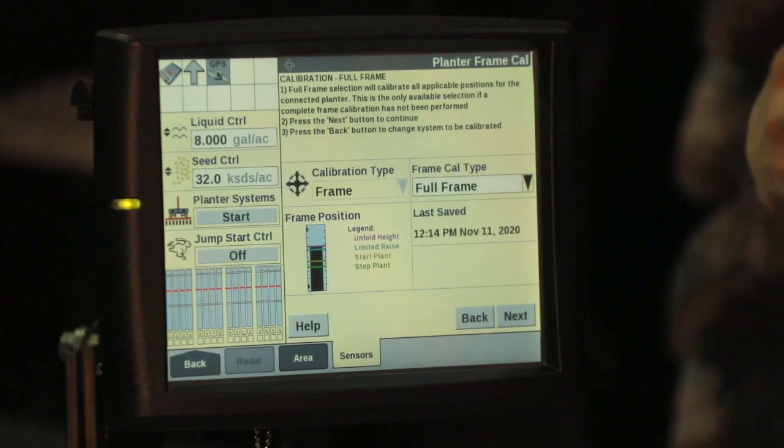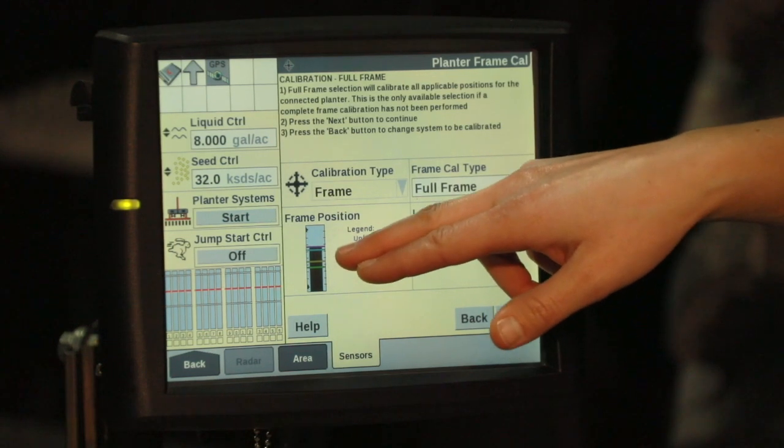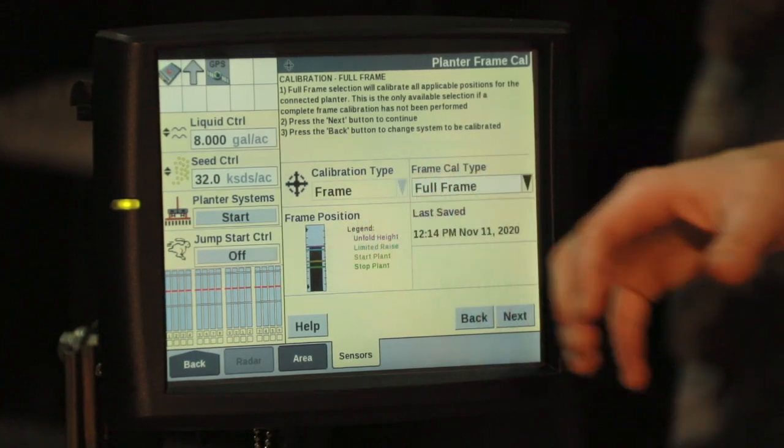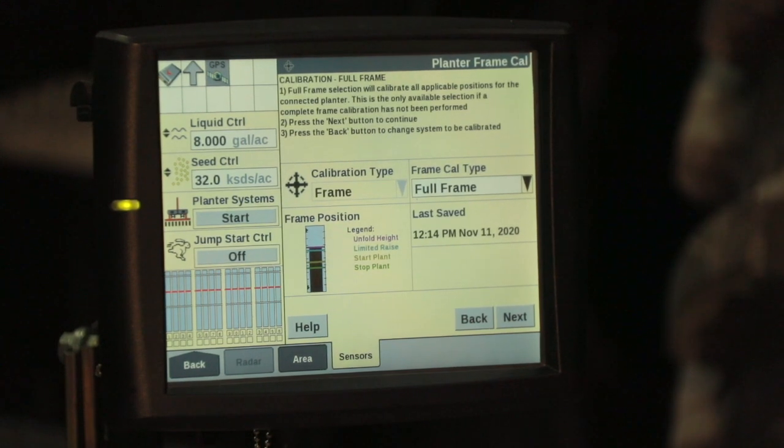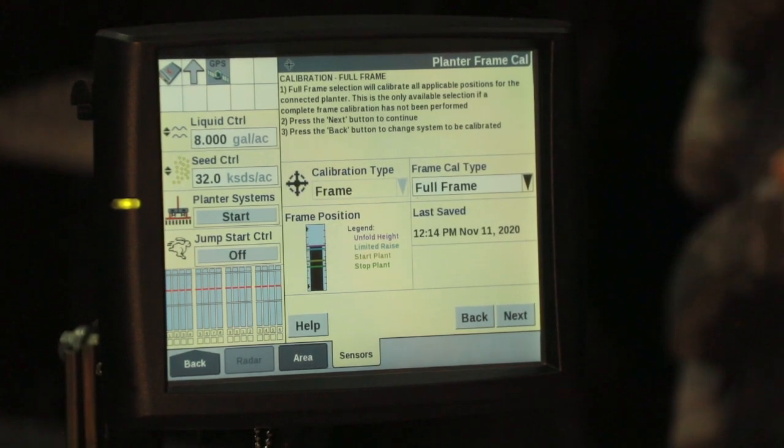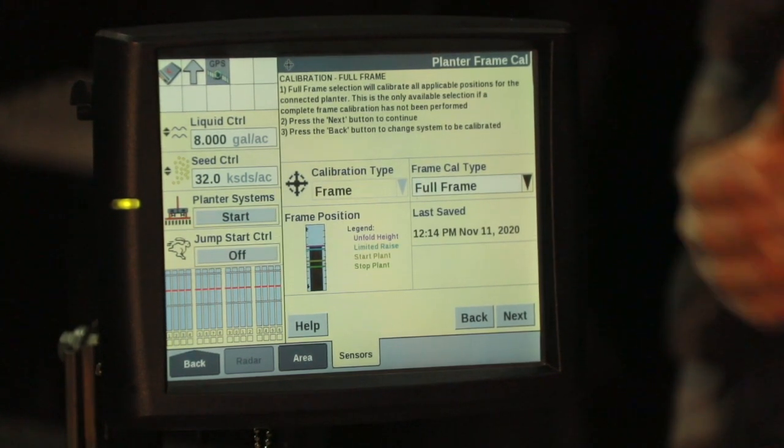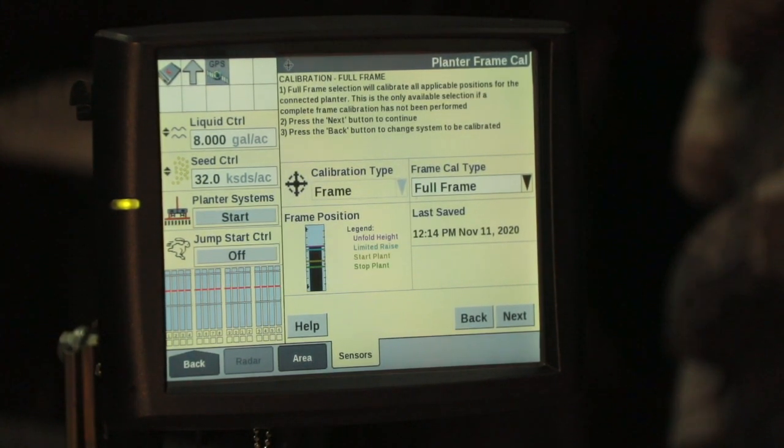Each little colored bar on this graph is going to explain where our start stop plant heights are, as well as our unfold and our limited raise height, so you can compare your current toolbar position to where each of your set calibrations are.